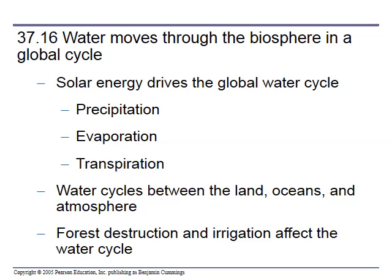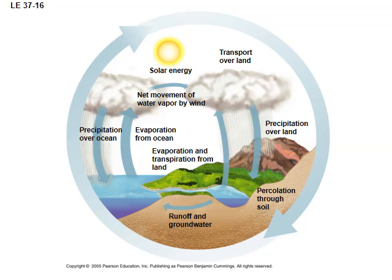Water cycles between the land, oceans, and atmosphere. Forest destruction and irrigation affect the water cycle. Starting with evaporation taking water up to the clouds, it can precipitate over land; evaporation from the ocean can also precipitate over land. Water goes through the rocks and can run as groundwater. One key thing: there's no new water on the planet. The water here has been here for billions of years — it just gets moved around.